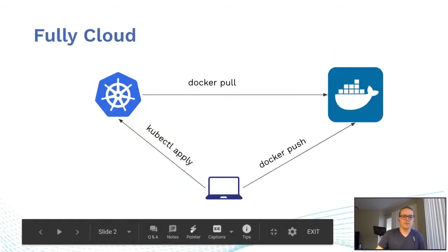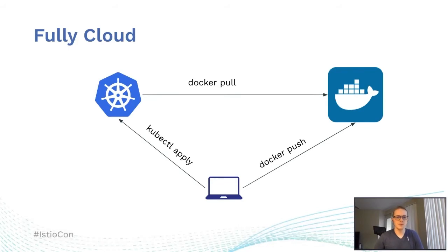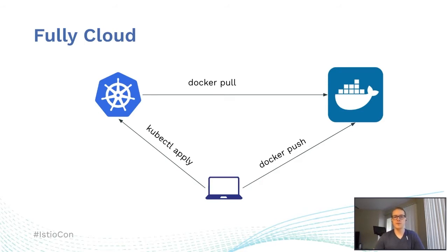Our first and most common setup — our baseline that we'll be comparing everything else to — is the fully cloud environment. This is just like testing with a real Kubernetes cluster on some cloud provider with a real Docker registry. Every time we want to make a change, we build all the images, push them up to the registry, do some kubectl commands to modify our deployments to use the new images, and then our Kubernetes cluster pulls from that registry. End to end, this can take quite a while — often minutes, just to test even a trivial change, pushing hundreds of megabytes.